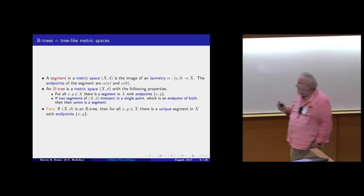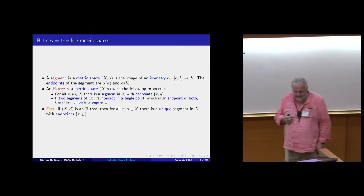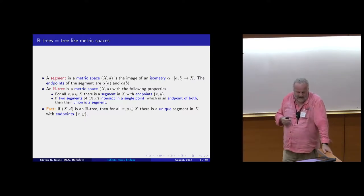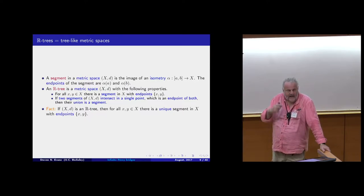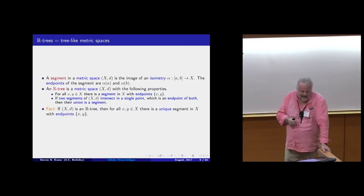Real trees are going to appear in what we're talking about today, so let me give a quick introduction. We saw this last week in Anita Vinter's lecture. One of the nice things about real trees is that there are many different axiomatic prescriptions for them. The one I give here doesn't look at first sight like the one Anita gave via the four-point condition, but these objects are so rich they have many different axiomatic characterizations.